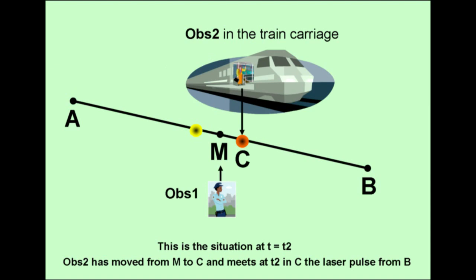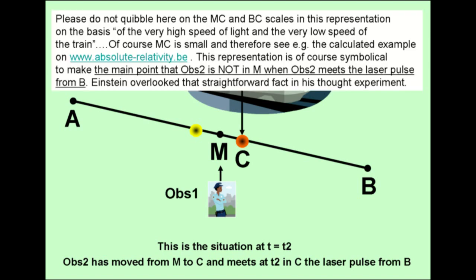Here is the situation at time instance T2. The laser pulse from B meets OBS-2 in location C to the right of M, since the train also traveled a distance MC during the travel of the laser pulse from B to C. The laser pulse from A has not yet arrived in M.